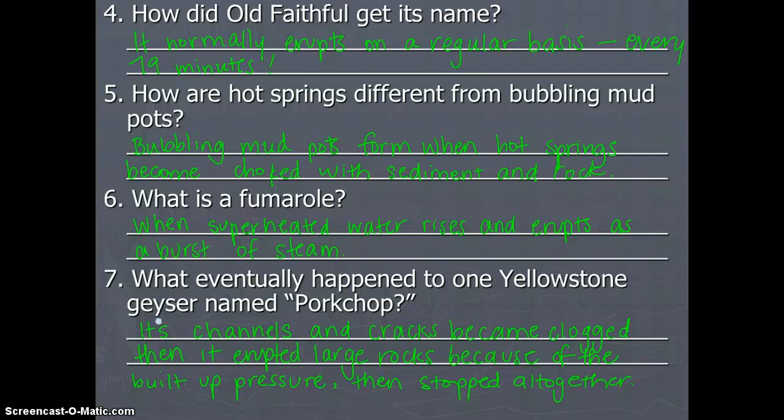Old Faithful is a geyser in Yellowstone that erupts on such a regular basis every 79 minutes, in fact, that that's how it got its name. And we also have things called bubbling mud pots that can form when hot springs become choked with sediment and rock. A fumarole is superheated water that rises and erupts as a burst of steam instead of a burst of water. And there was a geyser named Porkchop in Yellowstone that had channels and cracks that became clogged. Then it erupted large rocks because of the built-up pressure. And then it eventually stopped altogether.